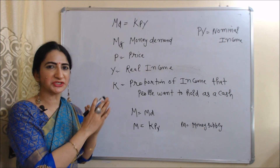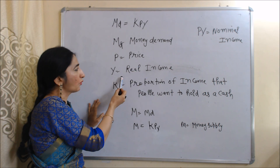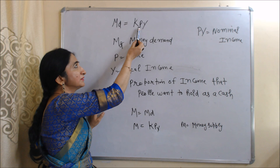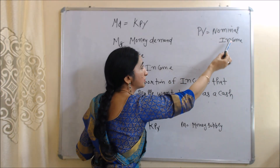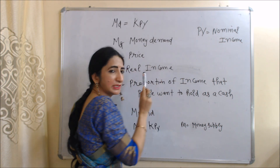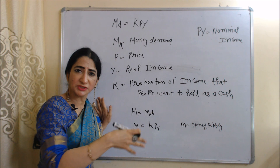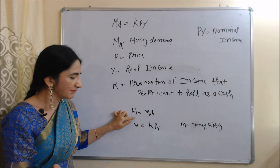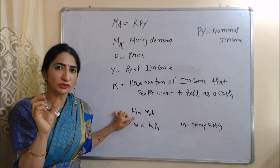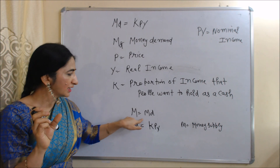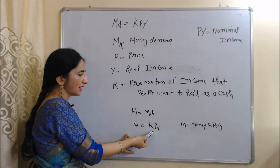Now we will see the equation of this approach: MD = kPY. Here, MD is money demand, P is the price level, Y is real income. When we multiply P by Y it equals nominal income. K is the proportion of income that people want to hold as cash. For equilibrium, money supply must equal money demand. M is money supply — fixed by monetary authorities — so M equals MD, which equals kPY. Therefore, M = kPY, meaning money supply equals money demand.